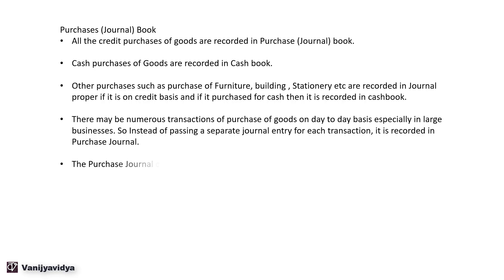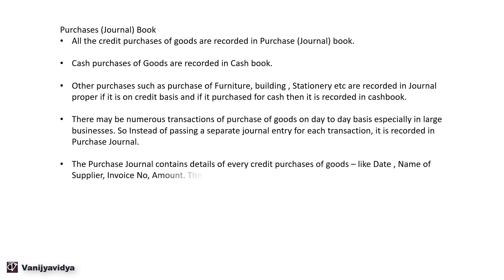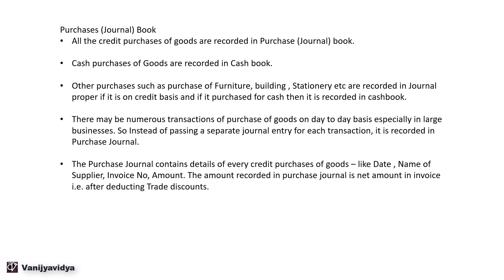The purchase journal contains details of every credit purchase of goods like date, name of supplier, invoice number, and amount. The amount recorded in the purchase journal is the net amount in the invoice, that is after deducting a trade discount. Basically, every credit purchase is recorded in the purchase journal along with its invoice details, and the amount will be after deducting trade discounts.